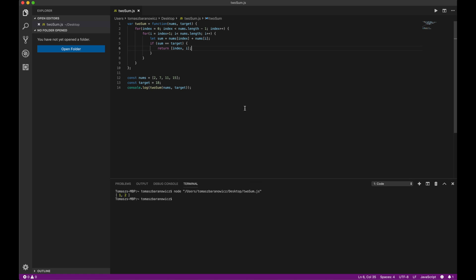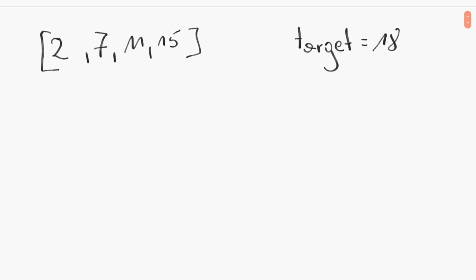However, there is a different solution which is definitely much more efficient. It demands more space but in this case that's not a big deal. Let's switch back to the whiteboard. The second solution uses a dictionary, which allows us to go through the whole array just once. The key will be the actual value and the value will be the index of that element, because at the end of the day we need an index.